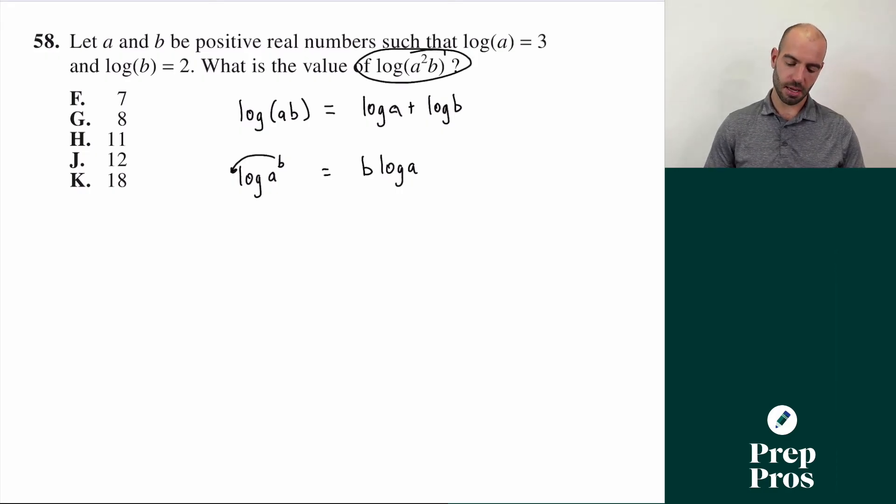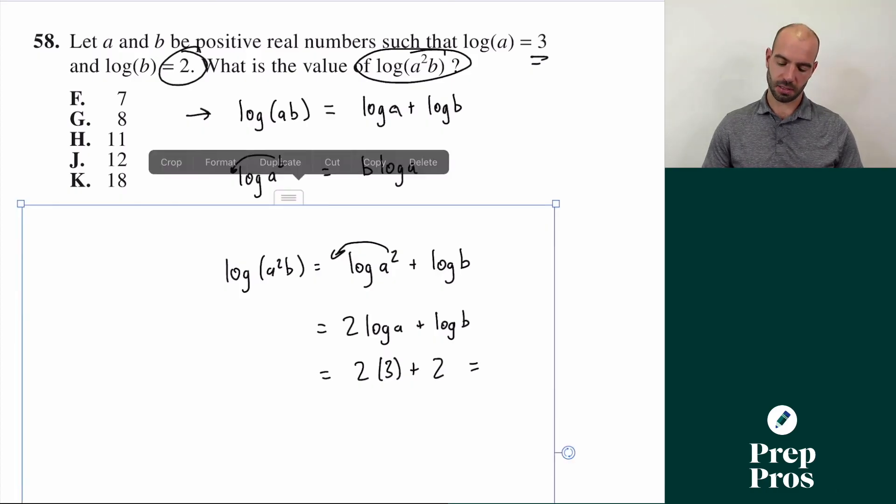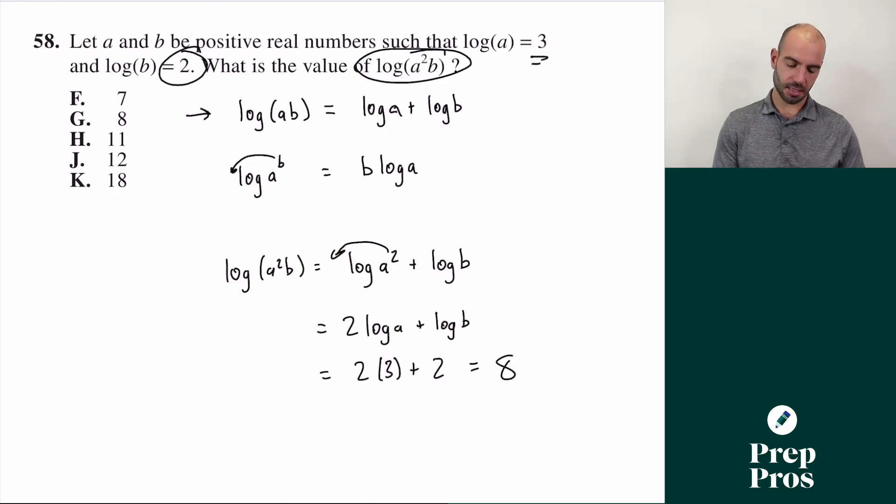If I have log A squared B, I can first use my rule here to split this. So I can write my log A squared B as log of A squared plus log of B. Now what I can do is I can use my second rule and bring this to the front. So I can write this as two log A plus log B. Now I know that log of A is three. So I can plug that in for log of A. And my log of B is two, so I can plug in a two. So two times three is six plus two gives me a value of eight. So our answer here, this tricky question is going to be G.